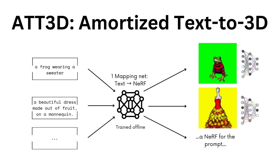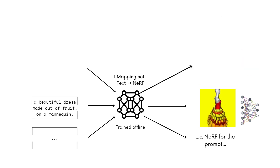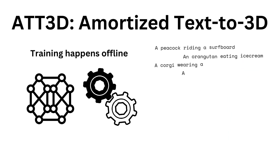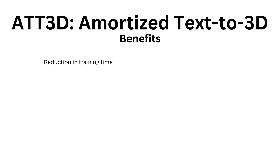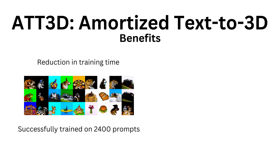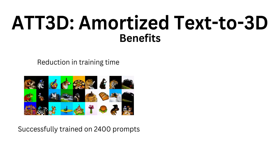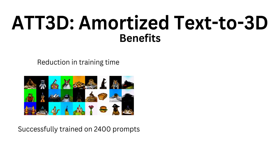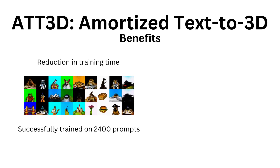Instead, we make the text-to-3D pipeline real-time by training one network to output models on various prompts. We do this by training offline on many setups, which reduces total training by sharing work across similar prompts. With only 30% of the time, we tune one model on all of DreamFusion's prompts, and we scaled the training on thousands of prompts with even larger savings.